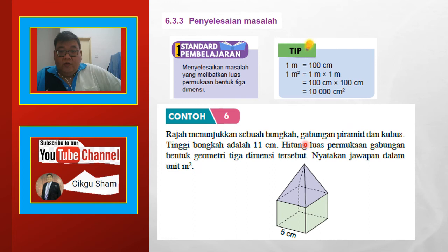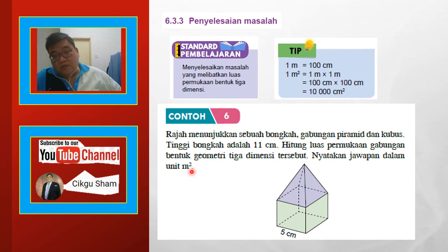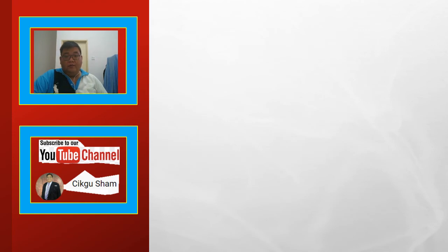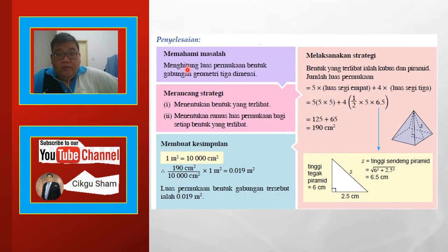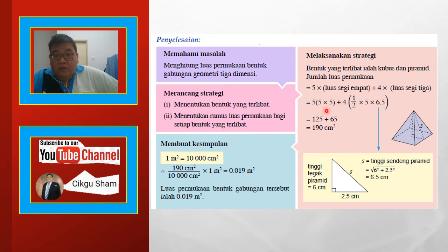Contoh 6: Rajah menunjukkan sebuah bongkah gabungan piramid dan kubus — atas tu piramid, bawah tu kubus. Tinggi bongkah adalah 11, maksudnya daripada puncak sampai bawah 11. Hitung luas permukaan gabungan bentuk geometri 3 dimensi tersebut, nyatakan jawapan dalam unit meter persegi. Penyelesaian: menentukan bentuk yang terlibat dan rumus luas permukaan bagi setiap bentuk. Bentuk yang terlibat ialah kubus dan piramid. Jumlah luas permukaan = 5 darab luas segi 4 tambah 4 darab luas segi 3.